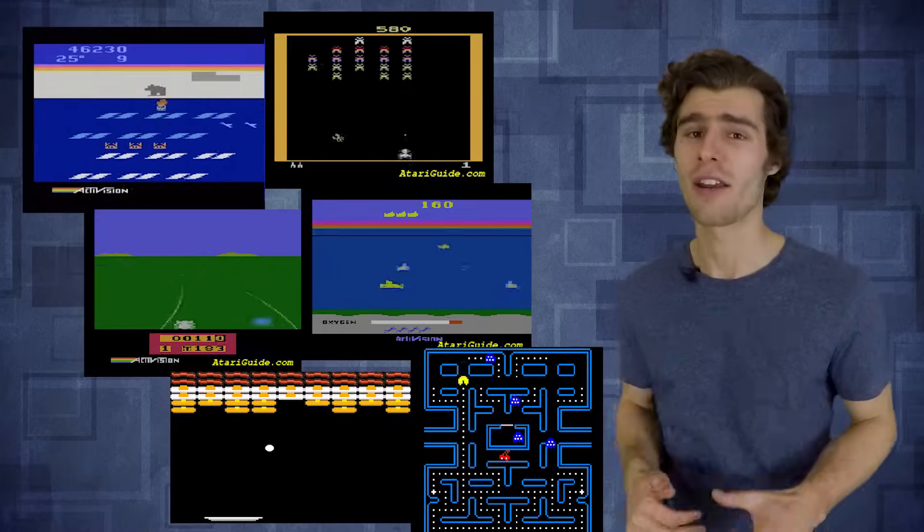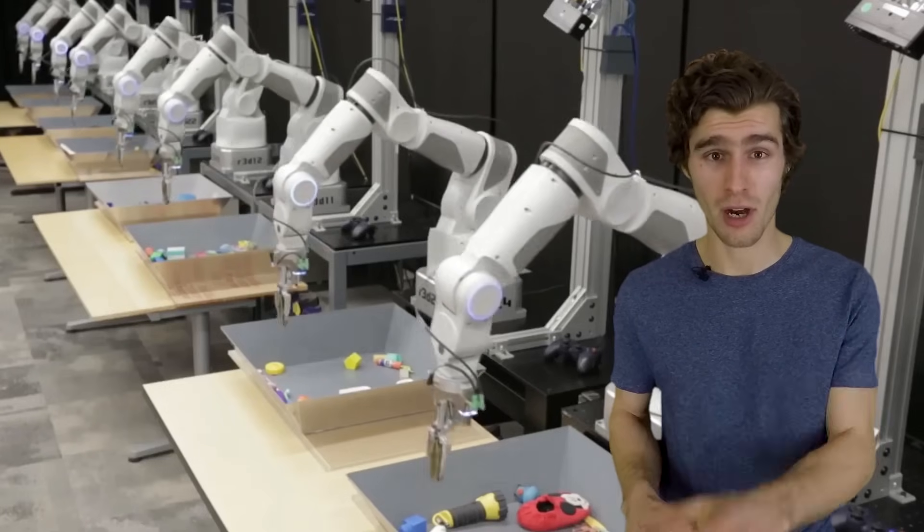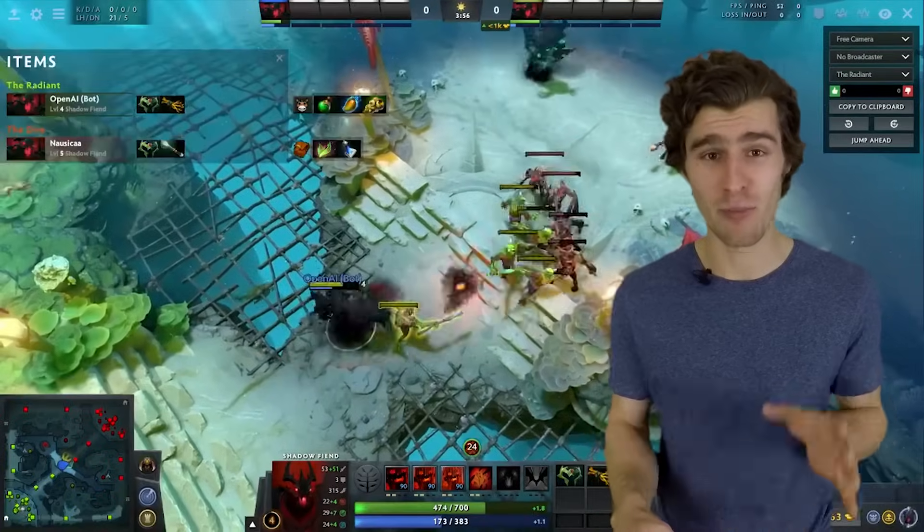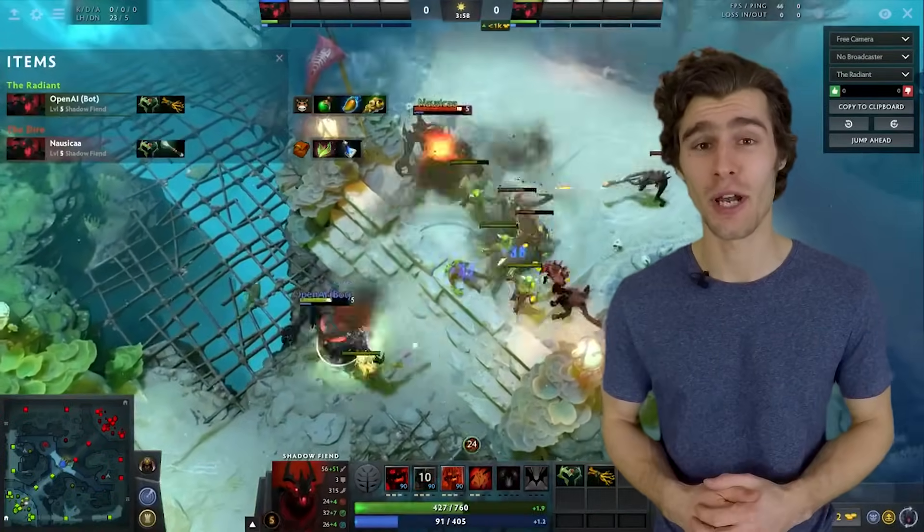From the amazing results on vintage Atari games, DeepMind's victory with AlphaGo, stunning breakthroughs in robotic arm manipulation, and even beating professional players at 1v1 Dota, the field of reinforcement learning has literally exploded in recent years.